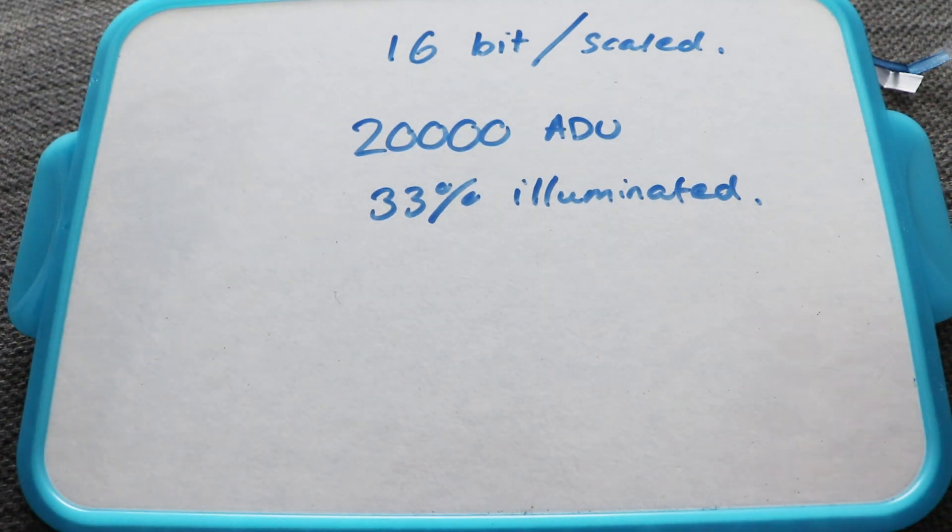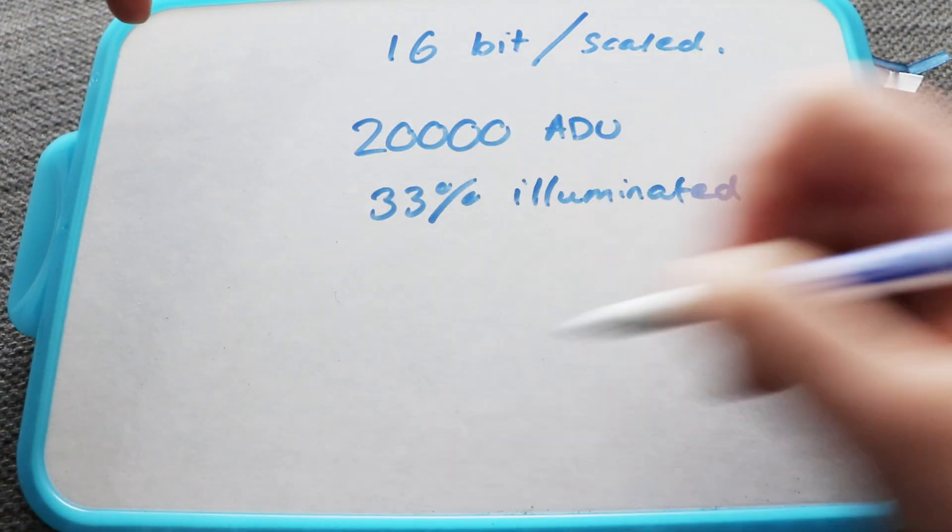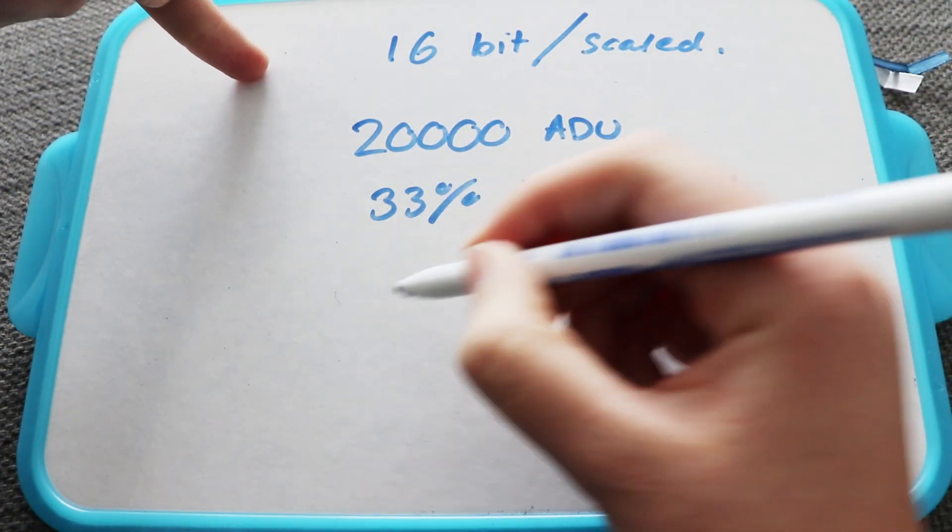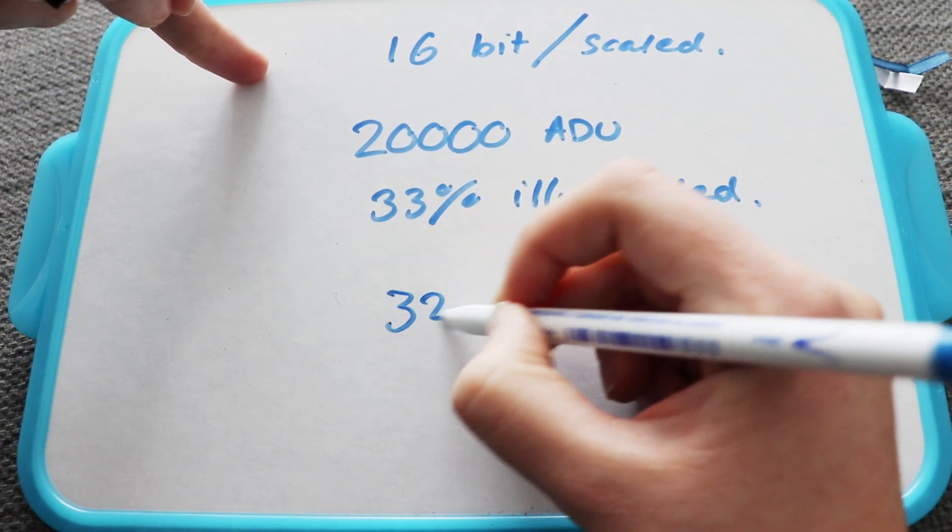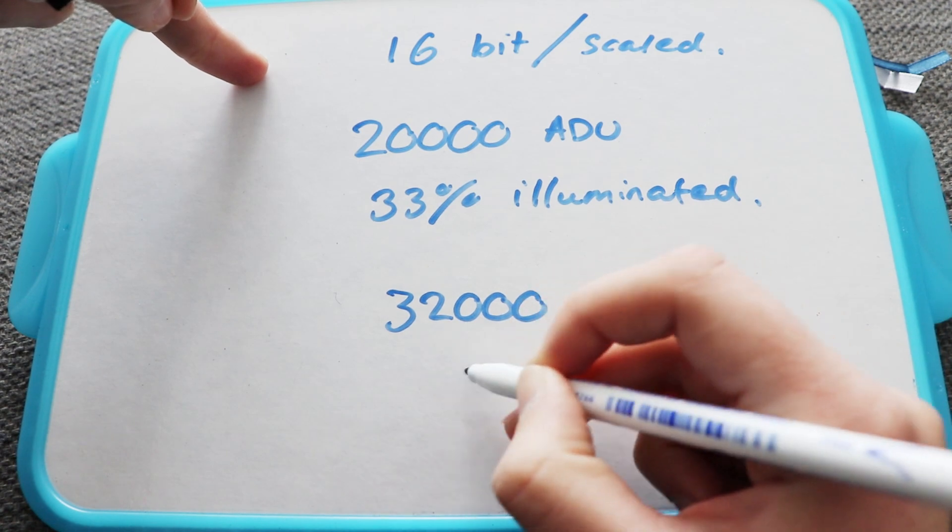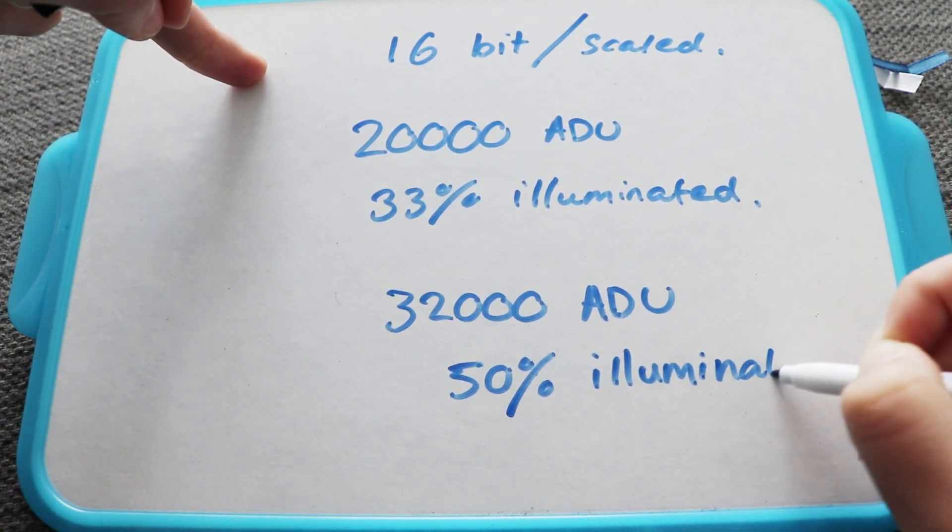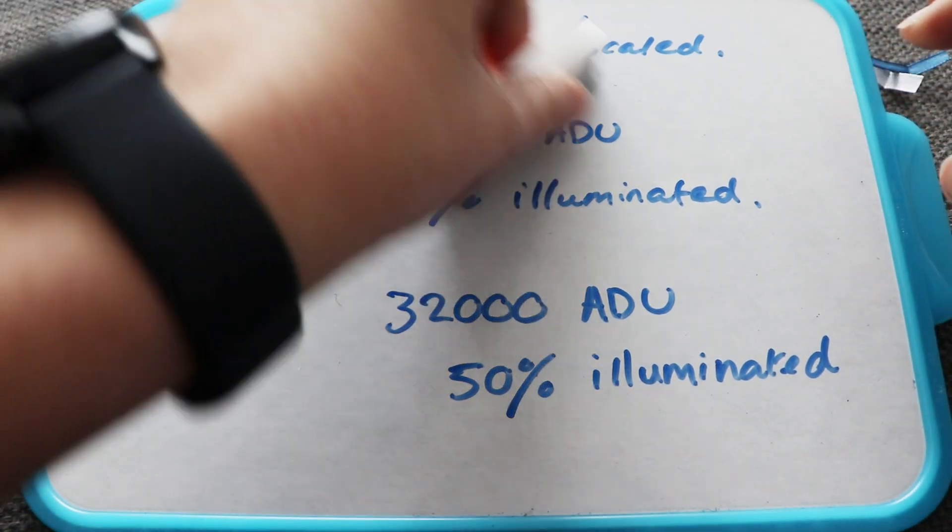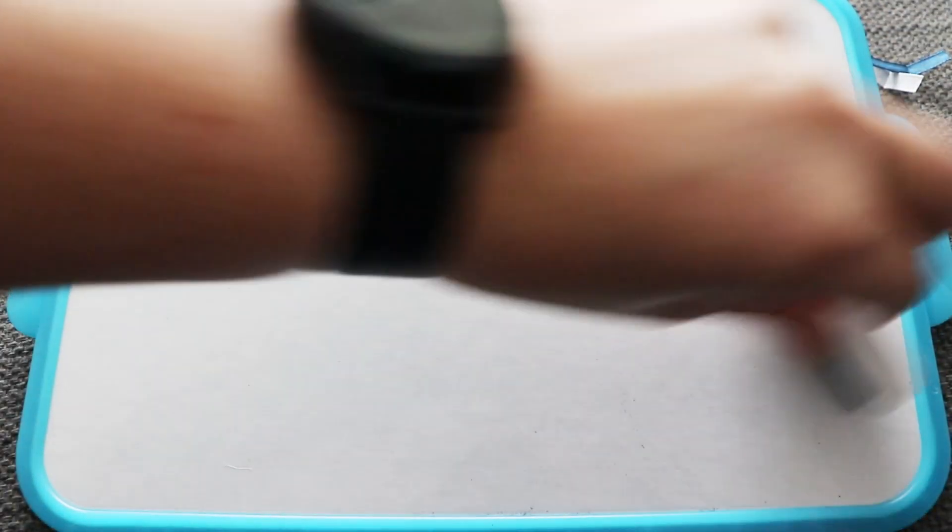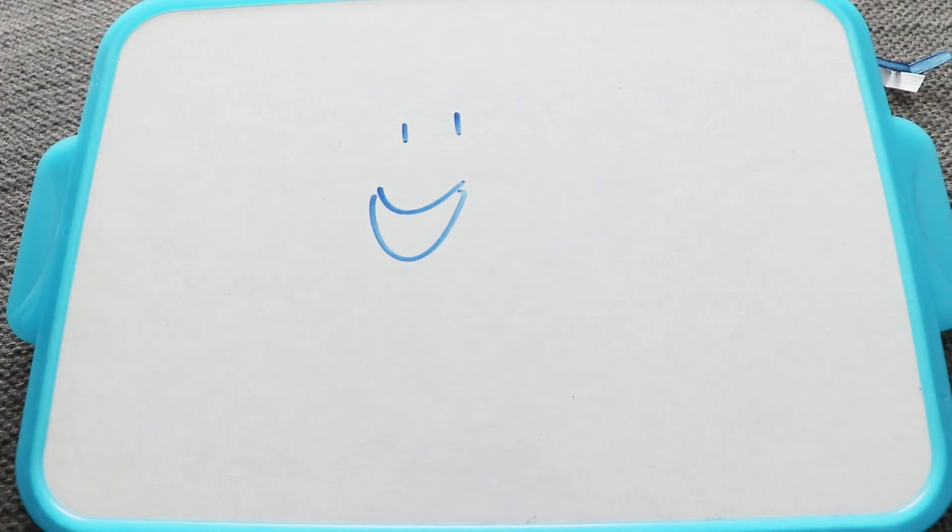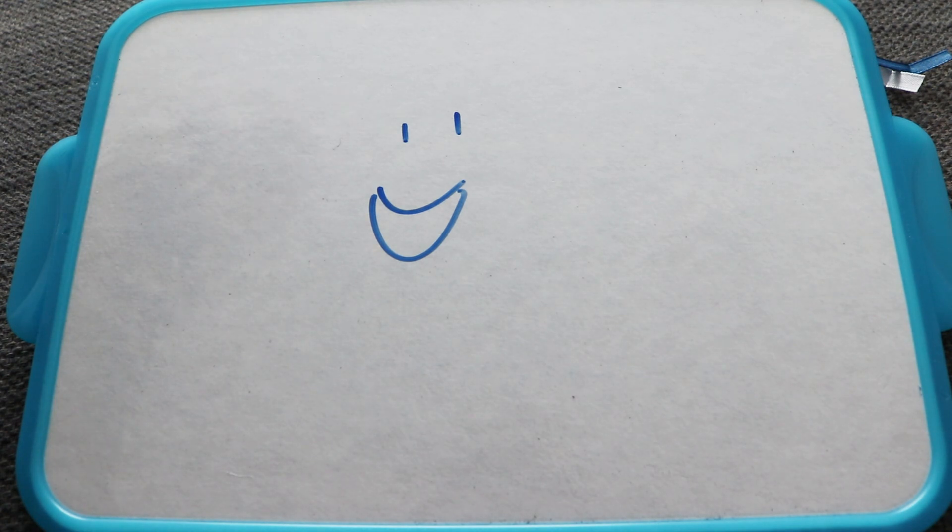20,000 ADU would give me around 33% illuminated. Which is fine. That would work. As long as the histogram or the data wasn't clipped to either side, that's fine. But I might be tempted to aim for something like 32,000 ADU, which would be around 50% illuminated.